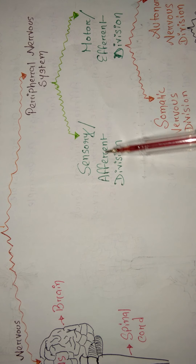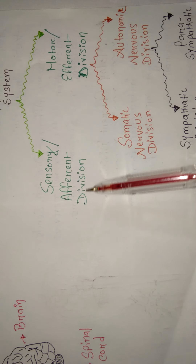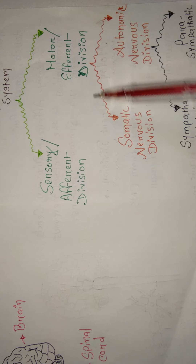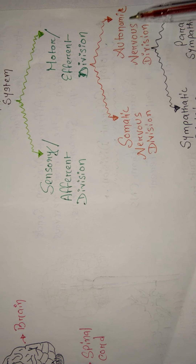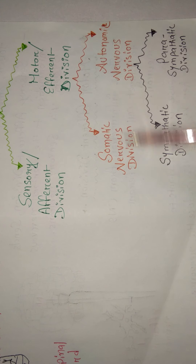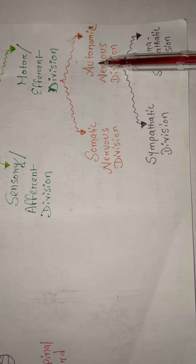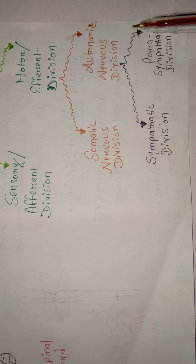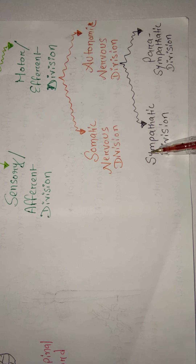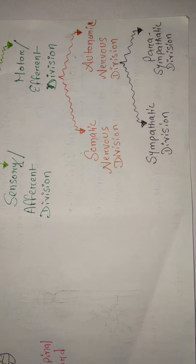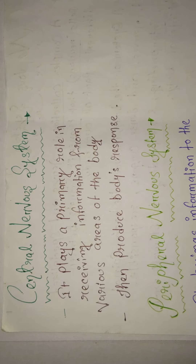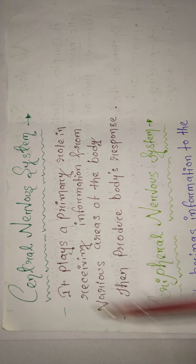The peripheral nervous system has two parts: sensory division and motor division. The sensory division is further divided into two parts: somatic nervous system and autonomic nervous system. The autonomic nervous system is further divided into two parts: sympathetic division and parasympathetic division.